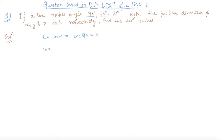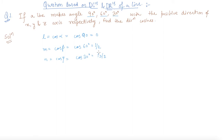M is equal to cos beta, which is cos of 60 degrees, so it is 1/2. And N is equal to cos of gamma, which is cos of 30 degrees, which is √3/2. So these are the direction cosines of the line.